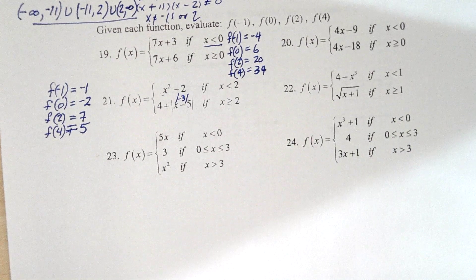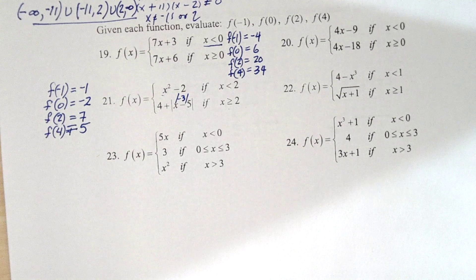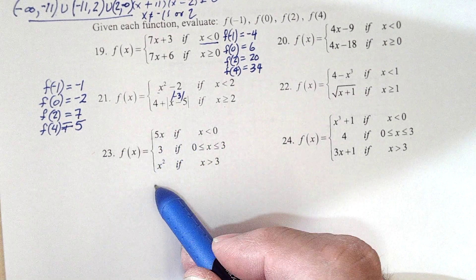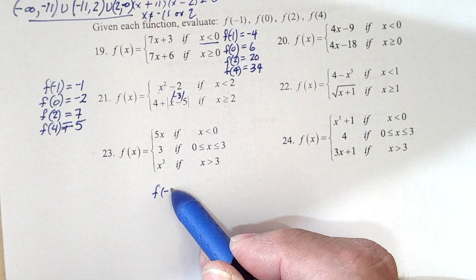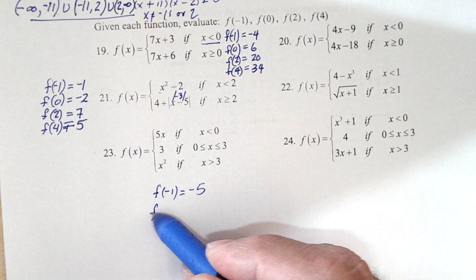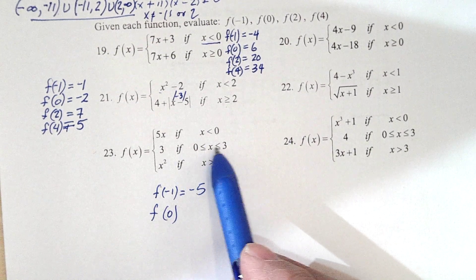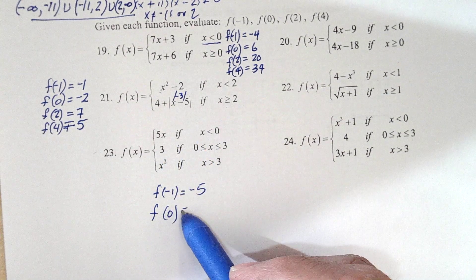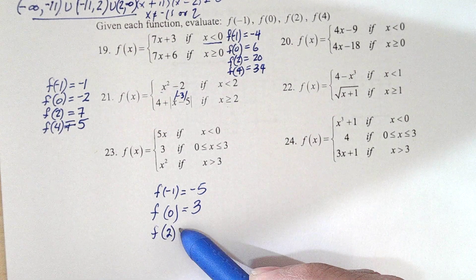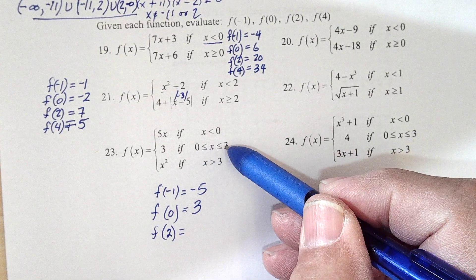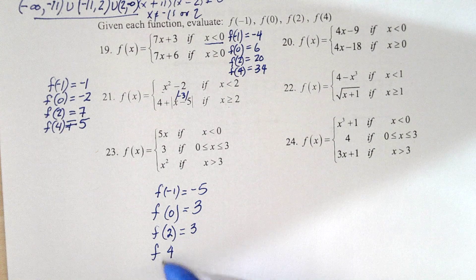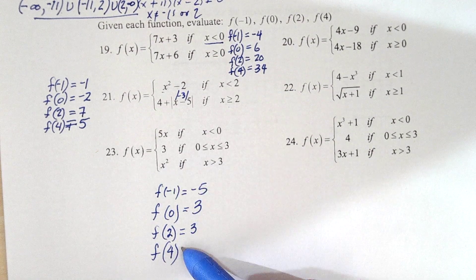Okay, and then 23. So f of negative 1, negative 1 is in this window, so 5 times negative 1 is negative 5. So f of negative 1, using this equation, because we're in this window, is negative 5. f of 0, 0 is in this window, and f of 0 would be 3. f of 2, 2 is also in this window, it's between 0 and 3, so 2 gives us 3. And f of 4, 4 is in this window, so 4 squared is 16.